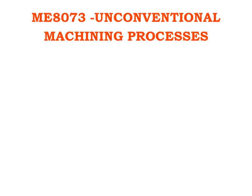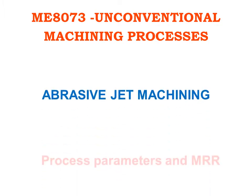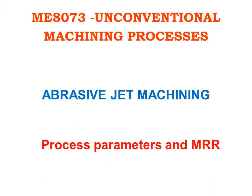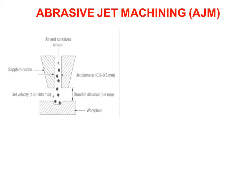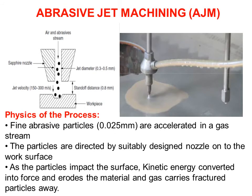Welcome back to the course Unconventional Machining Process. Today we are going to learn the process parameters and MRR in abrasive jet machining process. The physics of the abrasive jet machining process follows: fine abrasive particles of 0.025 mm are accelerated in a gas stream. The particles are directed by a suitably designed nozzle onto the work surface. As the particles impact the surface, the kinetic energy is converted into force and erodes the material, and gas carries the fractured particles away.